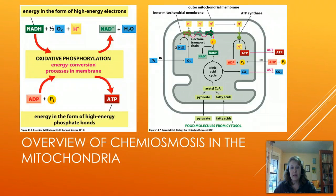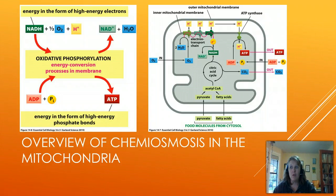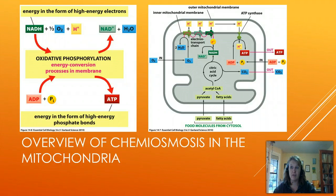Now let's look at chemiosmosis in the mitochondria in more detail. We start with energy in the form of high-energy electrons carried by NADH. Through this process, we transform it via oxidative phosphorylation to energy stored in high-energy phosphate bonds — you can see that transfer illustrated on the left. NADH and FADH2 reach the electron transport chain, which for all intents and purposes consists of three main proteins, and they drop off their electrons.